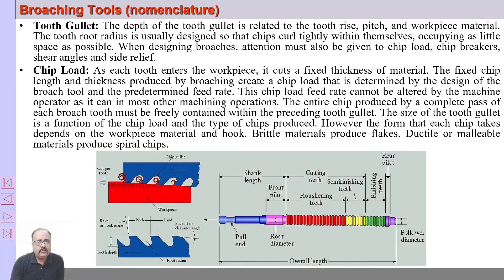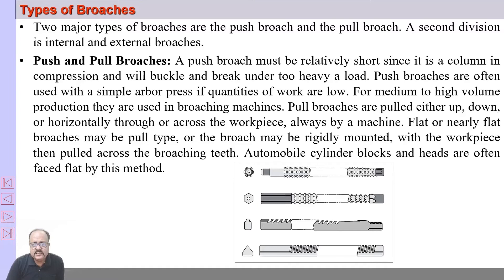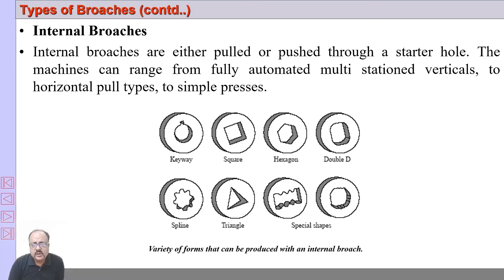A broaching tool can be of different cross sections — for example, a hexagonal broach tool. It can be pushed or pulled. Pulled broaches are pulled either up, down, or horizontally across the workpiece, and it is always done by a machine — not manually. The machine is relatively simple compared to other complicated machines. Automobile cylinder blocks and heads are often face-flatted by the broaching method. Different cross sections can be generated by a broaching tool.